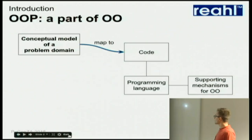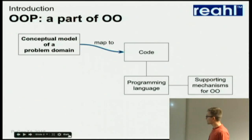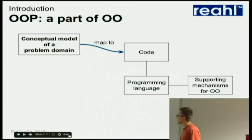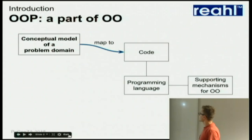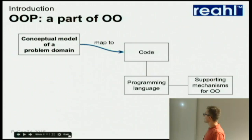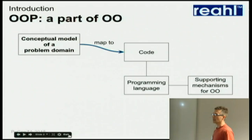A lot of people think that OO is all about the mechanisms that a programming language gives you, and that's what's being taught if you go into Google and look for tutorials. But that's not really how you should look at it, because the whole idea of object-oriented methods is that you should start with a conceptual model of your problem domain. Think a lot about how you understand your problem domain, then map that to code in a programming language, and if you're lucky you've got a language that supports those mechanisms. That's actually a much smaller part of the bigger picture.